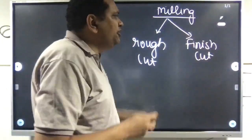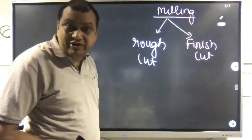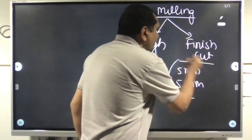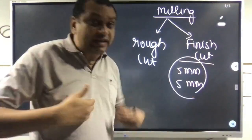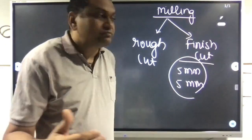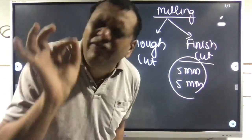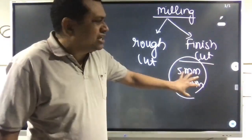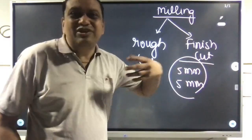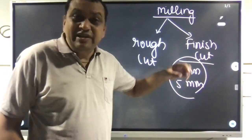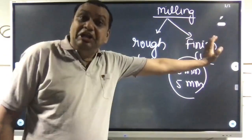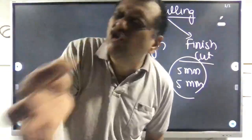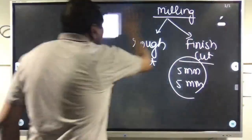In other words, when the numerical value of approach and overrun are given to you — let us say 5mm approach and 5mm overrun — it means it is a finish cut. If they are not giving the numerical value of approach and overrun, or they say approach and overrun are same, it means it is still a rough cut. When the numerical value of approach and overrun are given to you, it is a finish cut.